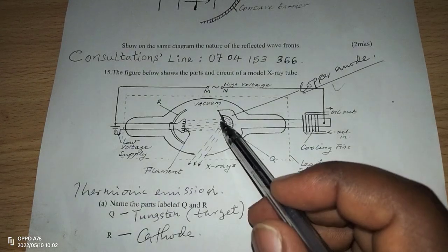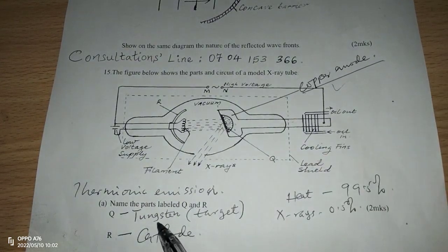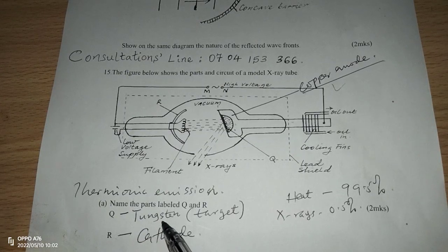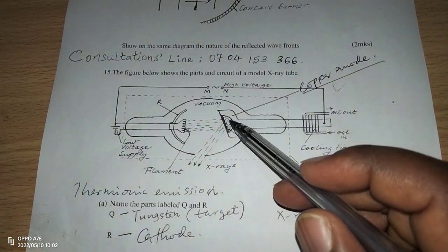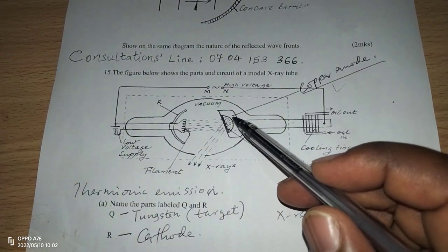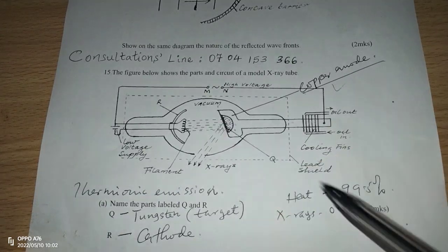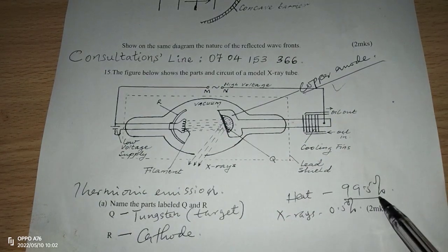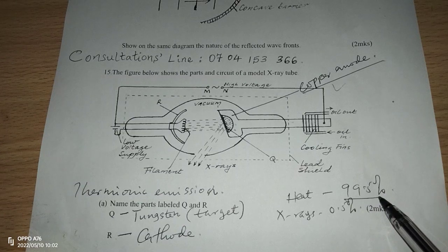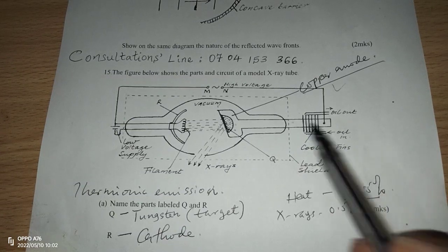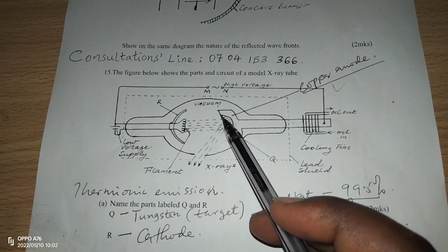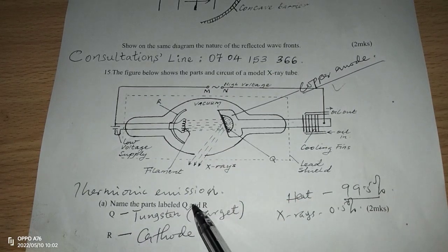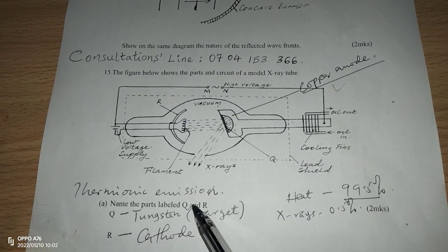That is why the material making the target has to be tungsten, or another metal called molybdenum. The two are preferred due to the high melting point. The high melting point ensures that the two metals are able to withstand the great amount of heat, 99.5% of the energy becoming heat energy. There is a lot of heat being produced at the anode, so the target has to be very hard so that it doesn't melt due to the excess heating.